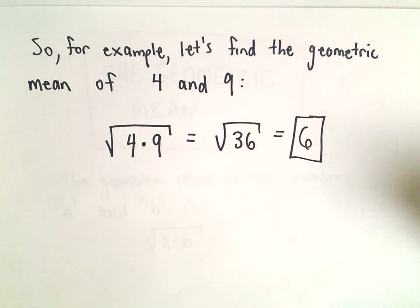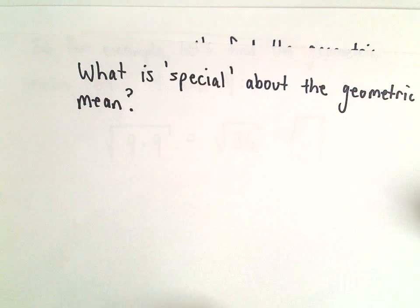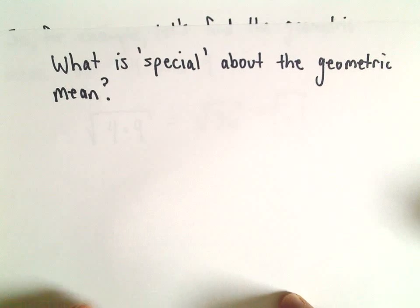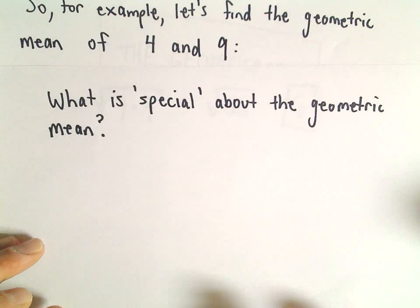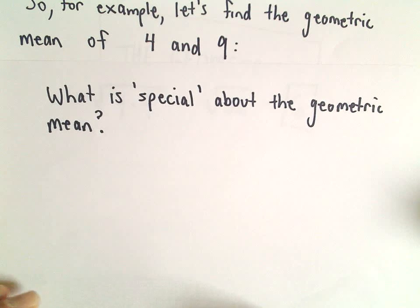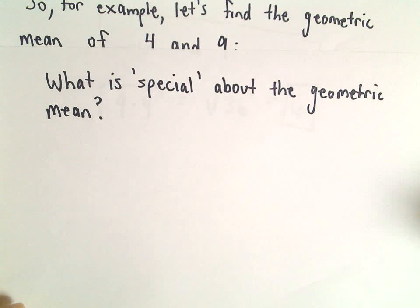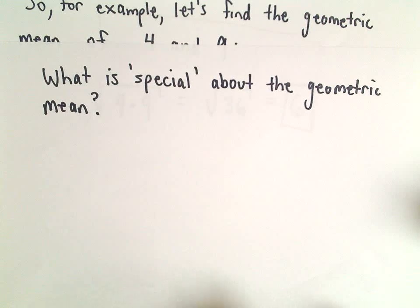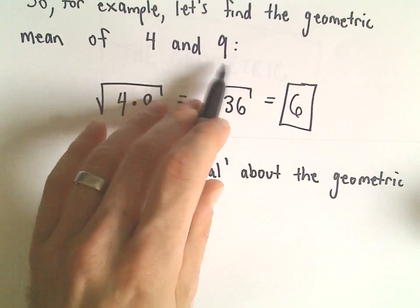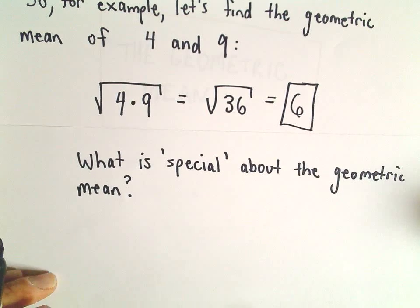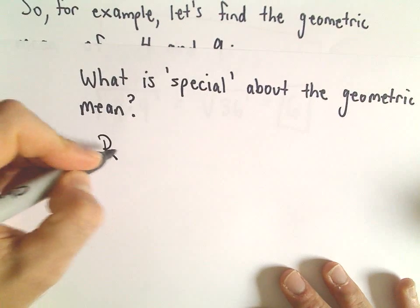So what's special about the geometric mean? An arithmetic mean is kind of the middle point, right? People find an arithmetic mean if they want to find, for example, their average grade on two tests. So what does this number 6 represent in relation to 4 and 9? Well, it has to do with ratios.